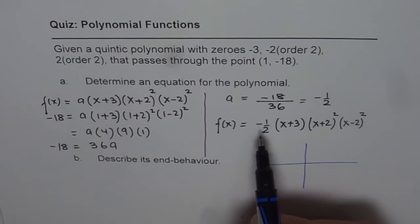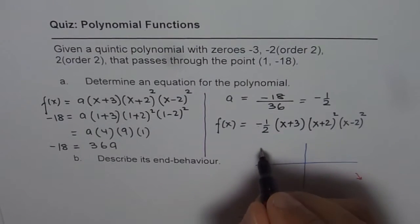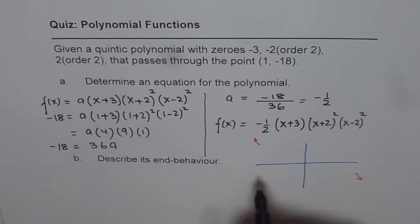And the end behavior is that it is opposite ends and right side down. So the function basically will be kind of starting from quadrant 2 and landing into quadrant 4. So that is how the function is going to be. So based on this, we can always write down the end behavior.